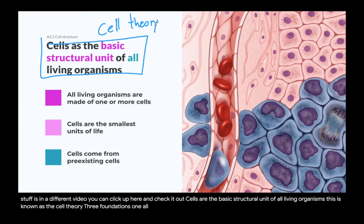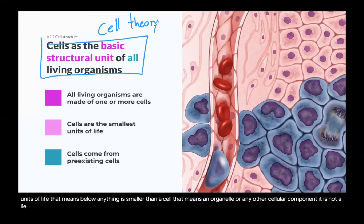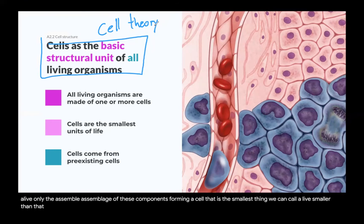One: all living organisms are made of one or more cells. Two: cells are the smallest units of life. That means anything smaller than a cell — an organelle or any other cellular component — is not alive. Only the assemblage of these components forming a cell is the smallest thing we can call alive. Smaller than that, it's not alive.